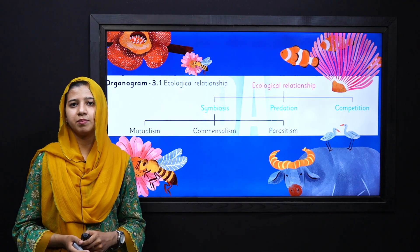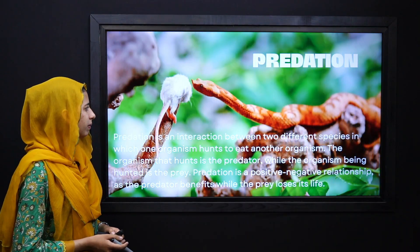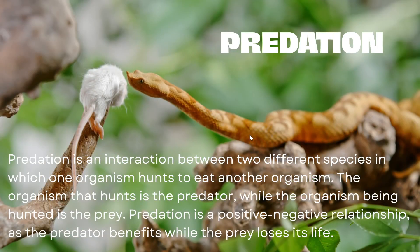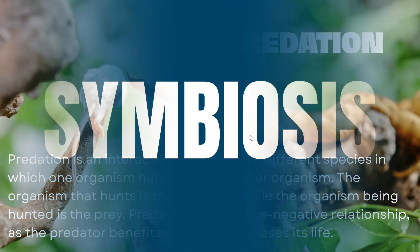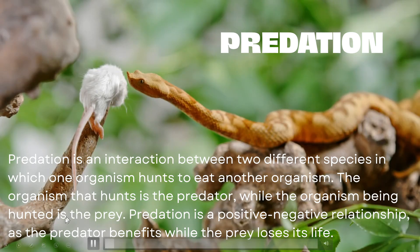But first we will discuss our first relation, that is predation. What do you know about the term predation? So if we look, predation is basically an interaction between two species — one is the predator, whereas the other one is the prey.